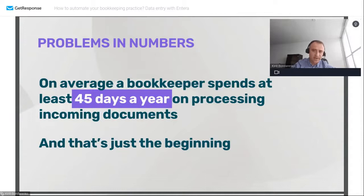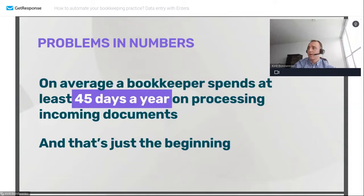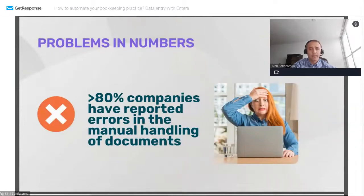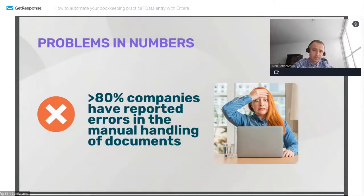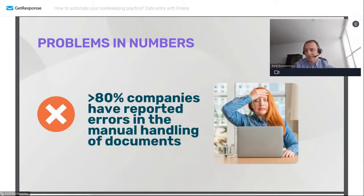Time consuming is the main problem — routine work with data entry which takes too much time. On average, an accountant spends at least 45 days per year to process incoming documents: to collect, input, and validate all data. As a result, they do routine work instead of spending time for other business needs, or being available to work with more clients. Time is money. The next very important part when we speak about challenges is inaccuracy. More than 80% of companies reported errors in manual handling of documents, often due to human factors — errors during input or errors in original documents. Either way, the team needs time to deal with it.